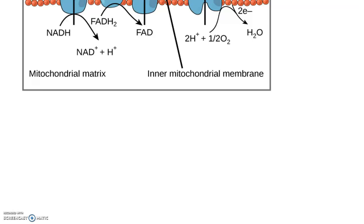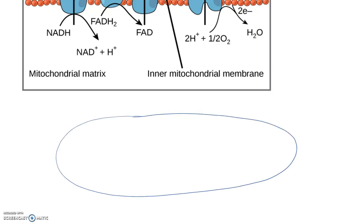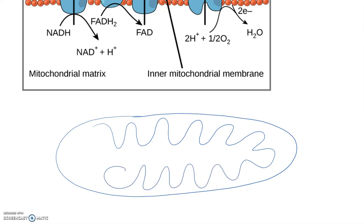Before we talk in detail about the electron transport chain, let's review the structure of a mitochondria. The mitochondria has an outer membrane and an inner membrane which is folded to form invaginations called cristae. The very interior part of the mitochondria is called the matrix, and the part between the two membranes is called the intermembrane space or intermembrane compartment.